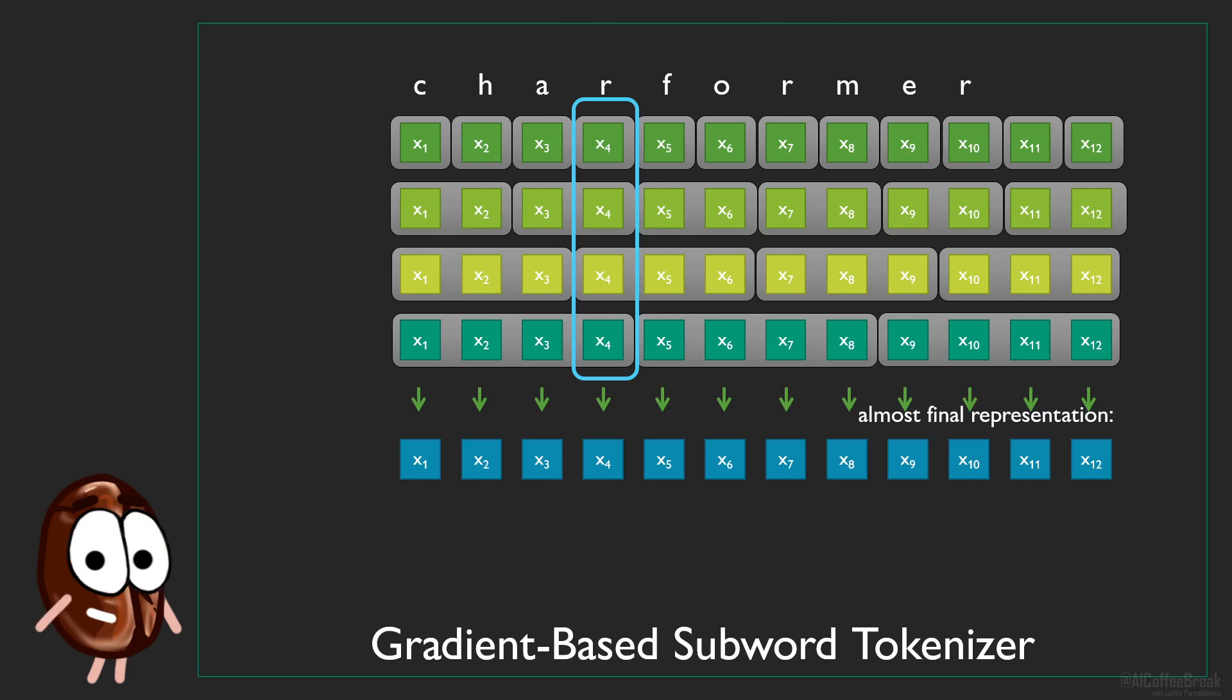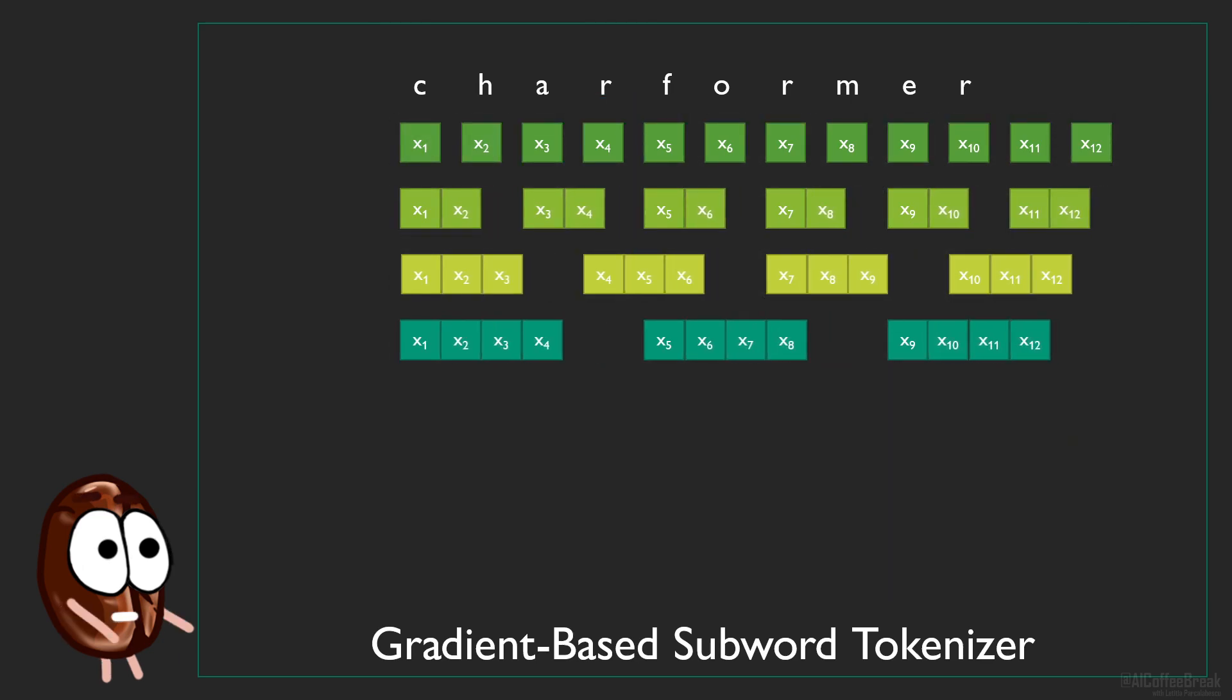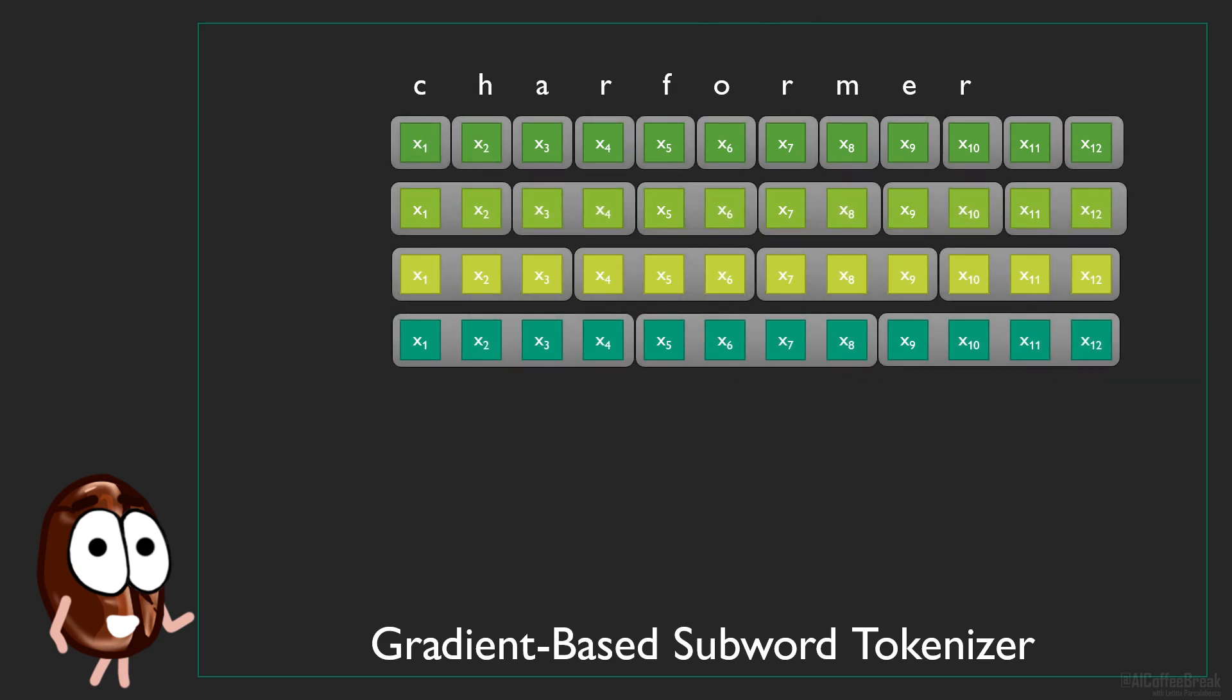So wait a minute, what just happened here? Well, in simple words, GBST basically asks, what does each character need from its fellow characters to inform its representation? And what if each other character can choose between 1-gram information, 2-gram, 3-gram and so on? Or even better, each character has the option to do a combination of 1-gram, 2-gram information.